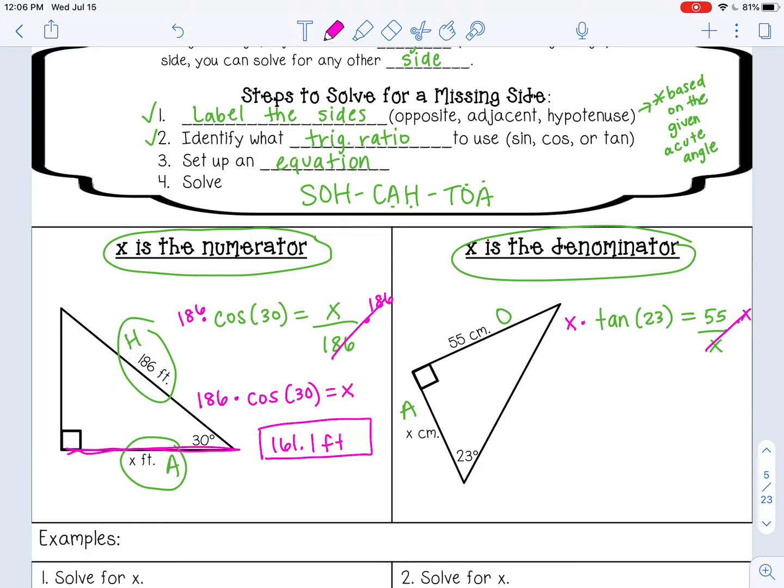So then I have - I'm going to write it like this - tangent of 23 times x equals 55. And tangent of 23, those are stuck together, so don't separate those. That's one value together. I can divide by that on both sides so that I can get x by itself. That will cancel. So in my calculator, I can type in 55 divided by tangent of 23.